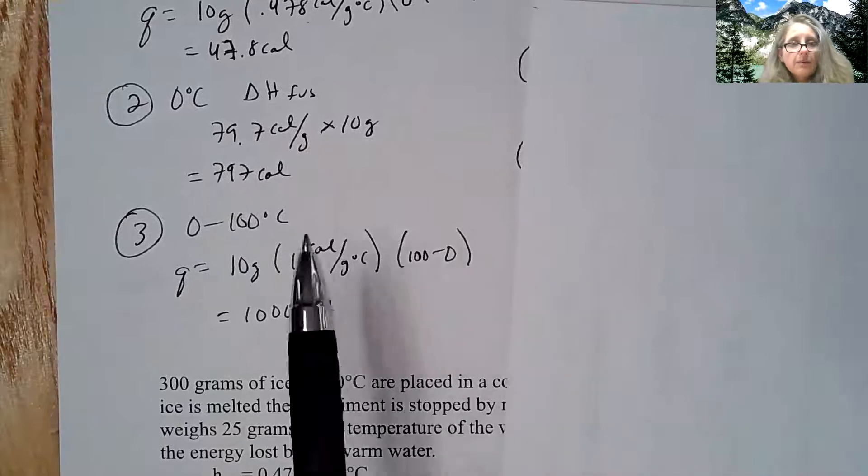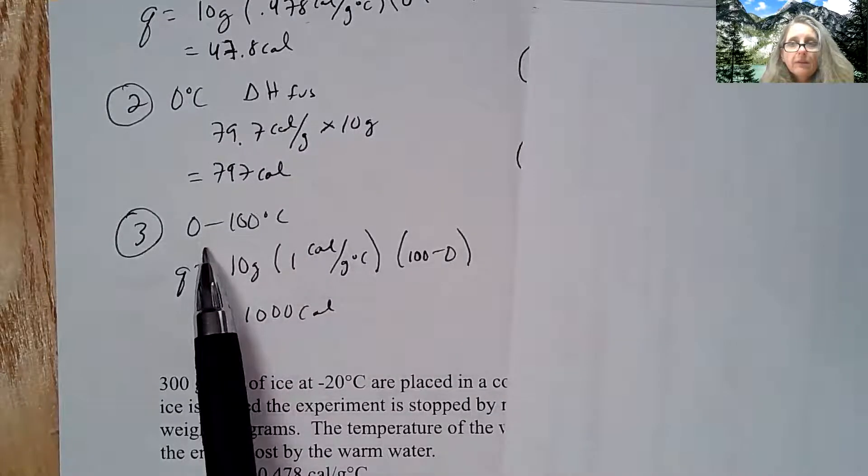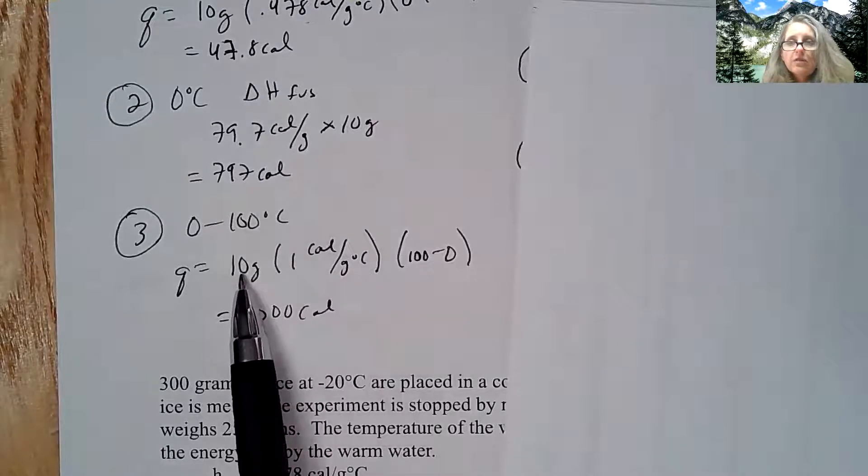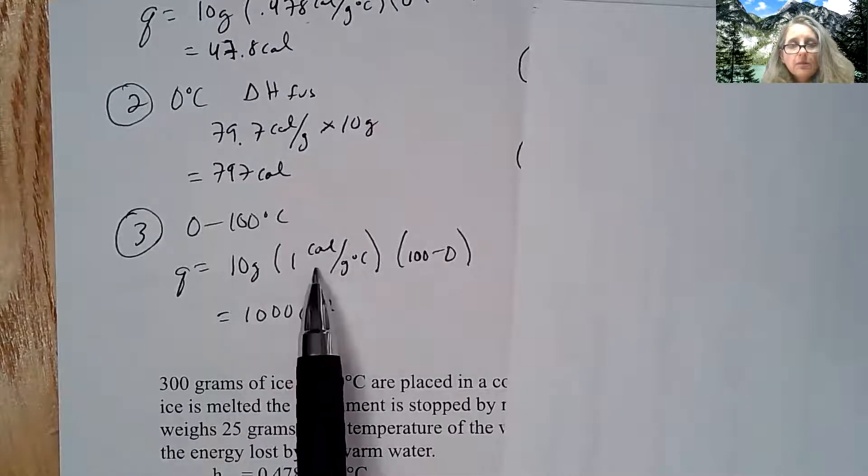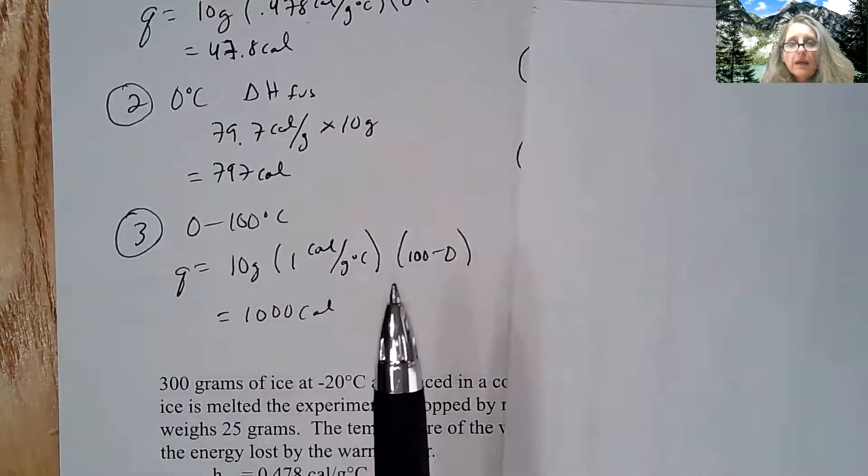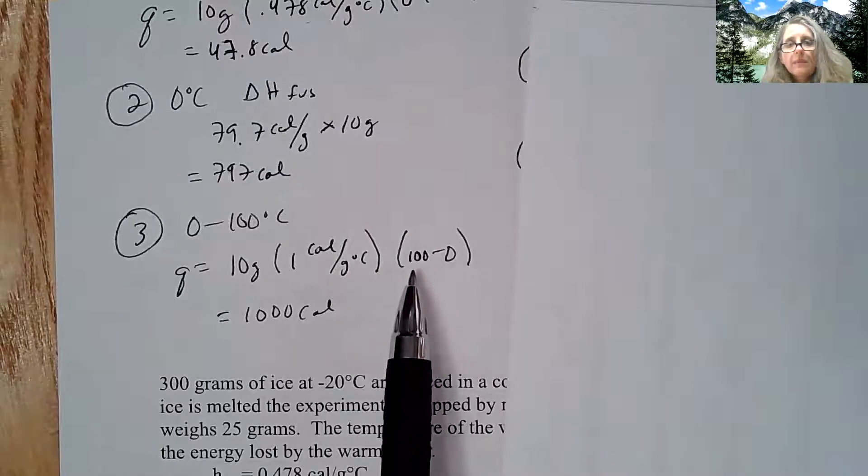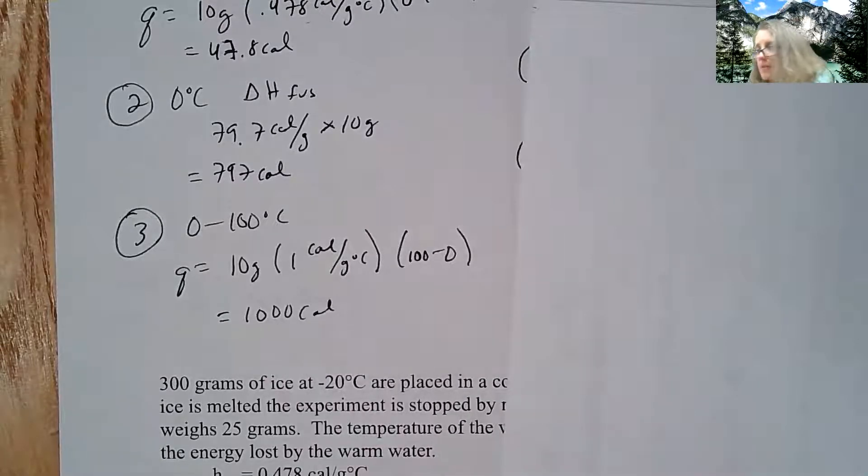Then if I look at step three, I'm going and I'm now in the liquid phase, I'm going from zero up to 100 degrees Celsius. So this is your traditional Q question. 10 grams, remember one calorie is essentially our definition of a calorie is to take one gram of pure water, one degree Celsius, 100 minus zero. So I get about 4180 calories.